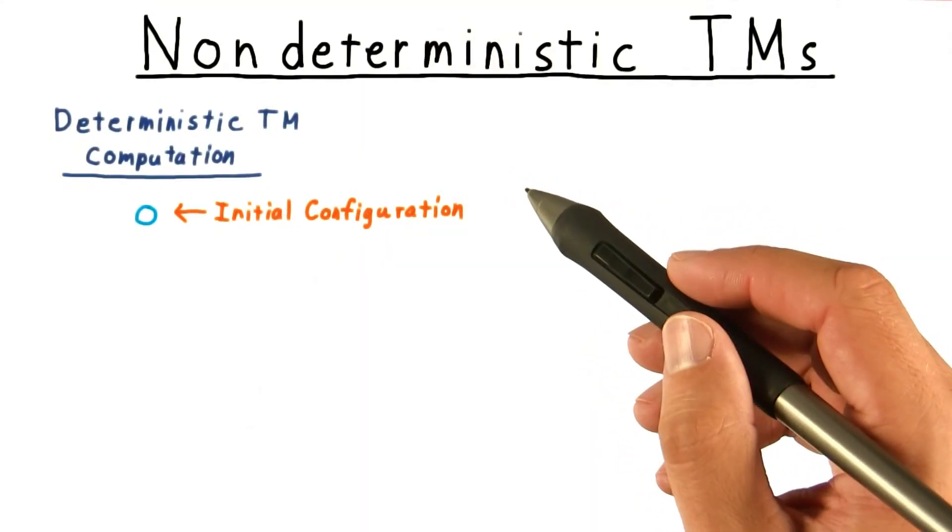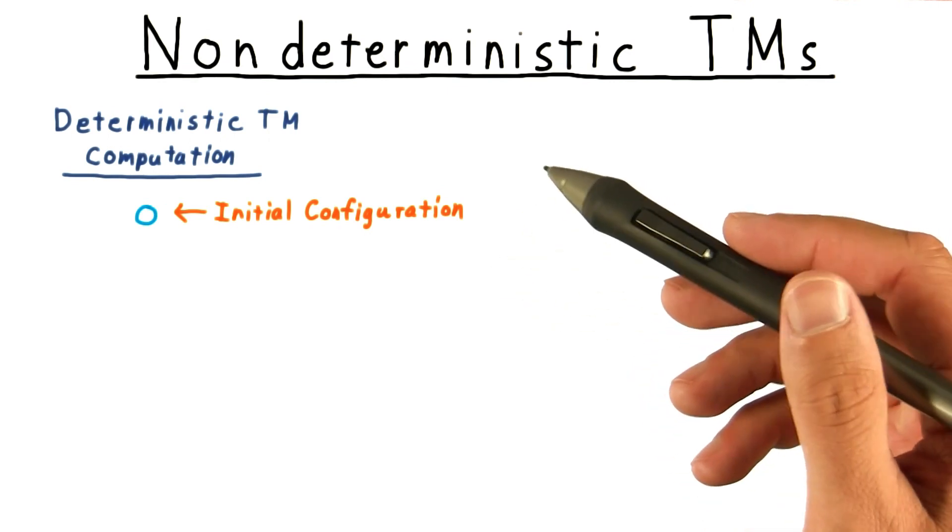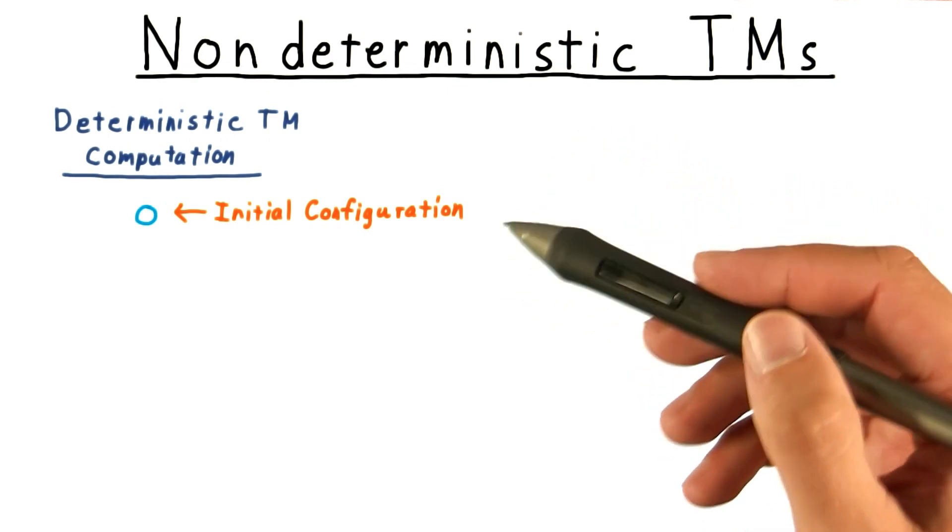Non-determinism in computer science is often misunderstood, so put aside whatever associations you might have had with the word. Perhaps the best way to understand non-deterministic Turing machines is by contrasting a non-deterministic computation with a deterministic one.